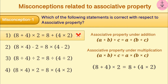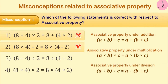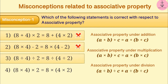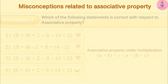Due to lack of proper understanding of associative property, option 2 may also be incorrectly chosen. Whole numbers are not associative under division; however, many times in order to make division easier, this property is incorrectly applied, leading to option 3 being chosen as the answer. With correct understanding of associative property, option 4 is chosen, which is the correct answer.